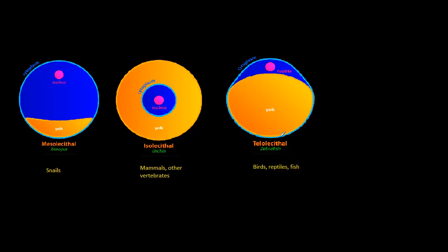In telolecithal, we have a large amount of yolk, but it's unevenly distributed in the egg. There's a large amount in one polar area. This is common in birds, reptiles, and fish.